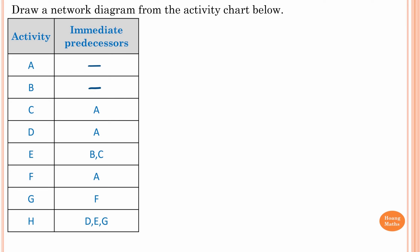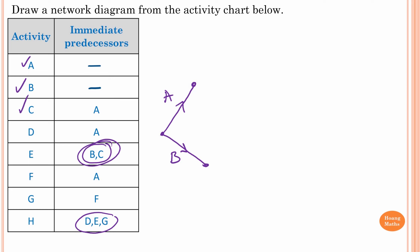Before drawing the network for this activity chart, note that activity B and C are joined together, as are activities D, E, and G. Activity A and B have no immediate predecessors, so I draw activity A here and activity B here. For activity C, B and C join together because A is an immediate predecessor of C, so we connect here — this is activity C. For activity D, A is an immediate predecessor, so we start from here and draw D.